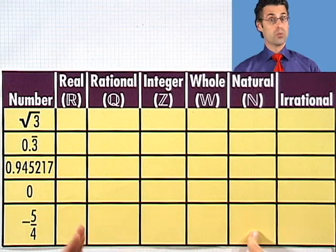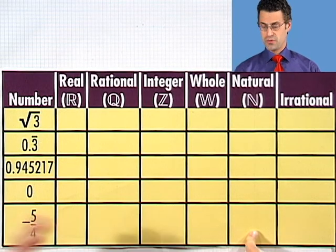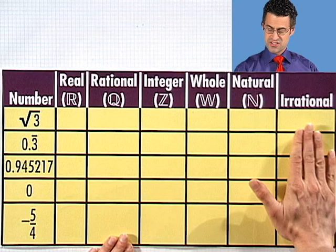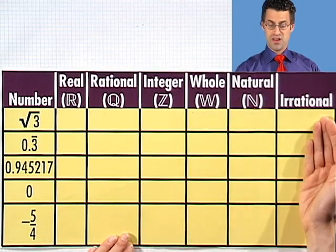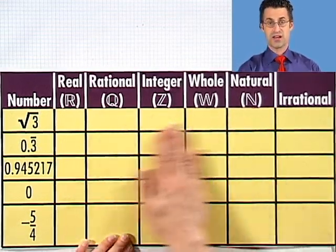The natural numbers that start at 1. 1, 2, 3, 4, and so on. And the irrational ones. These are the sort of mysterious ones. They're the leftover numbers. The numbers that don't fit into any of these other categories right here.